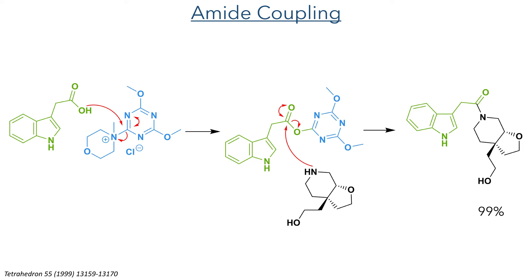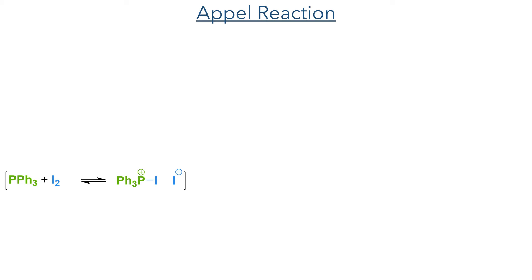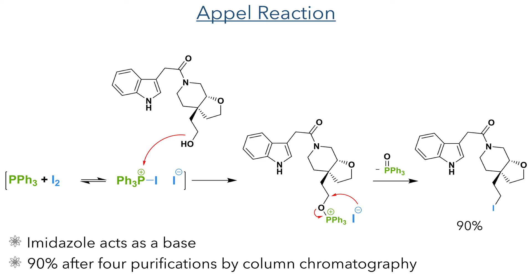With these two halves of the target molecule now coupled together, the authors needed to couple the other side to form the macrocycle in preparation for the transannular reaction. Before this could be carried out, they first had to convert the hydroxyl group into a halide — in this case an iodide, which they found was more reactive in the palladium-promoted coupling. They utilized an Appel reaction: triphenylphosphine was reacted with iodine to form an electrophilic phosphonium intermediate, which was attacked by the hydroxyl group. This formed an electrophilic phosphonium ether, which was attacked by iodide, displacing triphenylphosphine oxide in an SN2 fashion to produce the target iodide in 90% yield. Imidazole was also included to act as a base to scavenge liberated protons.